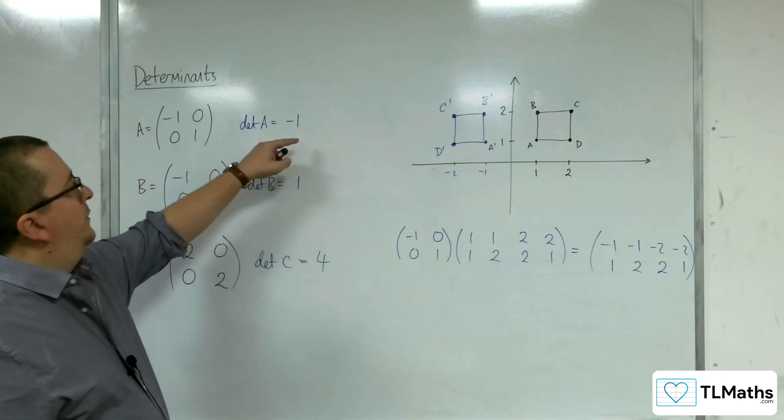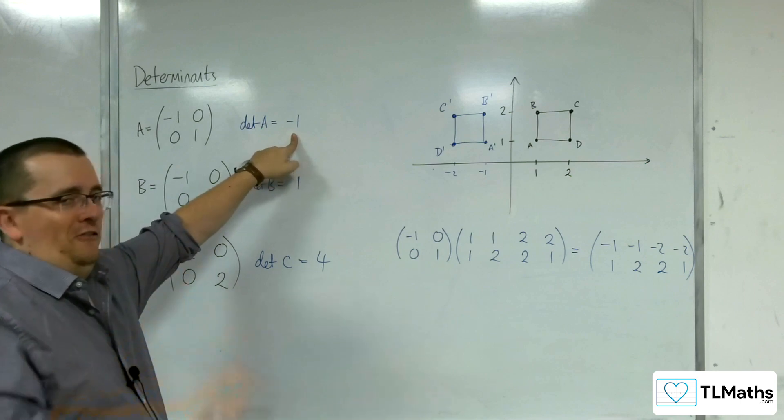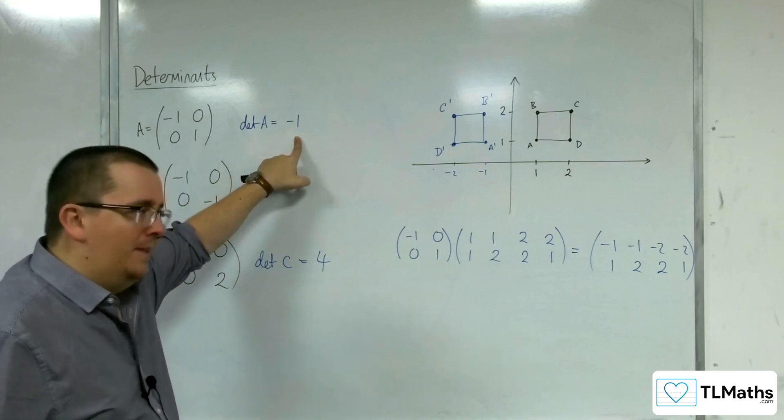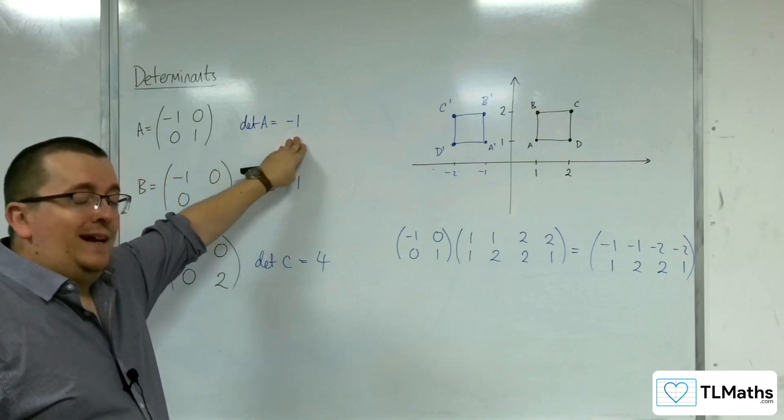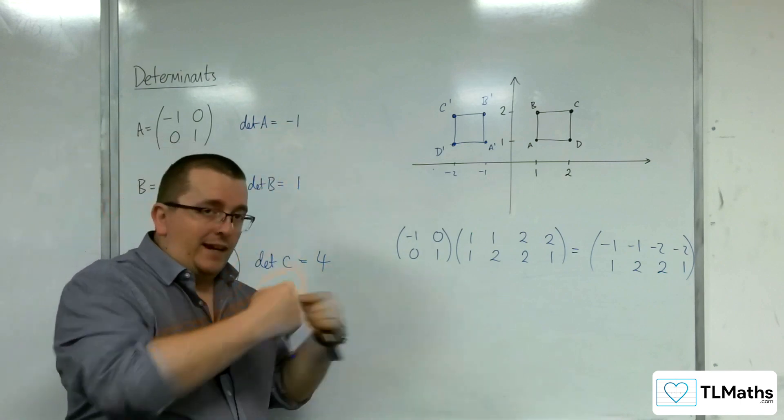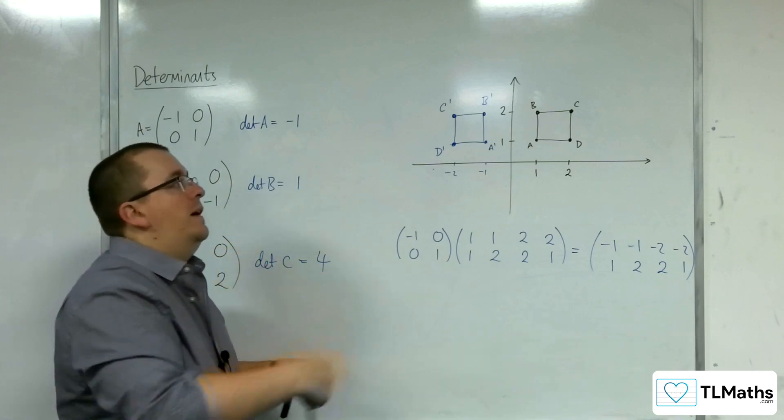And this is because the determinant of the matrix was negative. So the determinant of the matrix being negative actually changes the orientation of the vertices, and so you read them going round the other way.